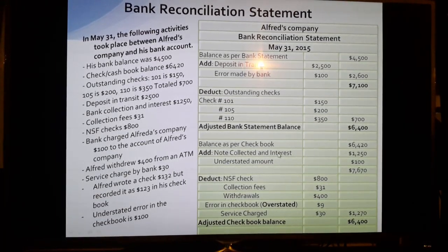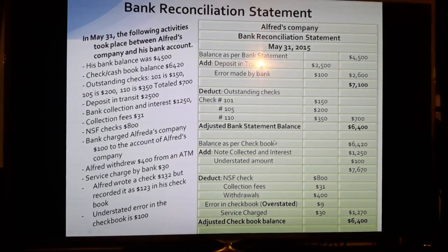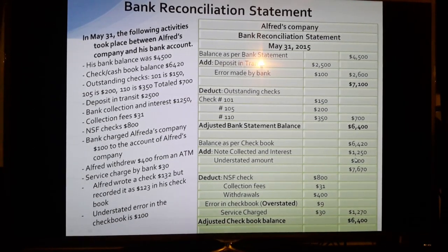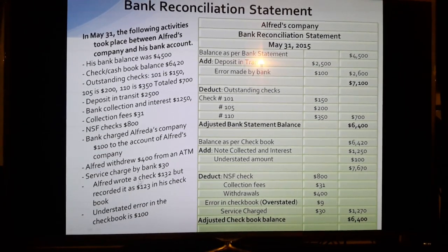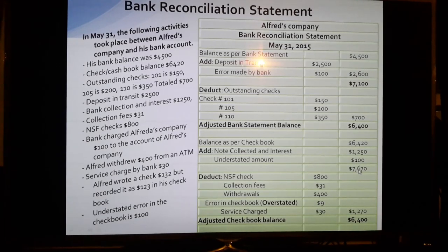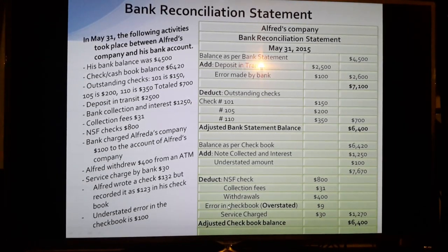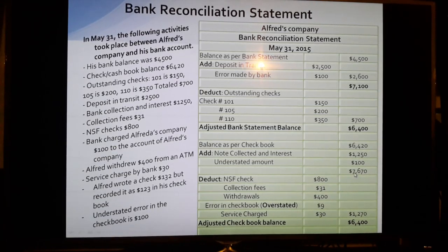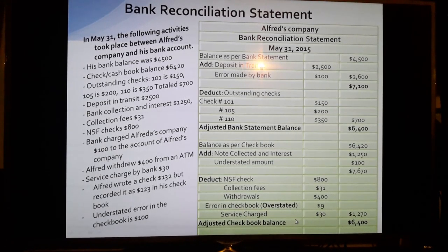For the checkbook side: balance per cash book is $6,420. Add note collected and interest of $1,250 and understated amount of $100, totaling $1,350, giving $7,670. Then deduct NSF checks, collection fees, ATM withdrawal, checkbook error (overstatement), and service charge — all deductions total $1,270. Subtracting $1,270 from $7,670 gives $6,400. The adjusted bank balance and adjusted checkbook balance both equal $6,400 — the accounts are reconciled.